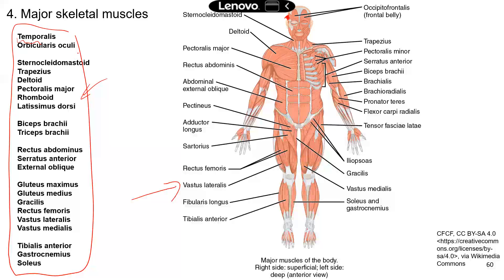Trapezius is mostly on the back, so we'll talk about it when we get to the posterior view. Next is the deltoid — the shoulder muscle — which most students easily remember. Then pectoralis major, the big muscle on the chest. When you move, flex, adduct, or rotate your arm at the shoulder, you can feel this muscle contracting and getting hard. Rhomboid and latissimus dorsi are on the back, so we'll cover those on the next slide.